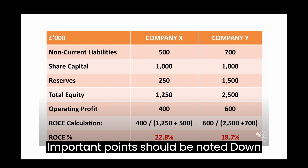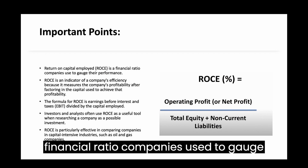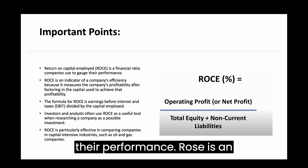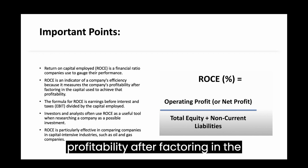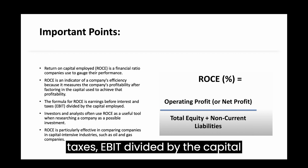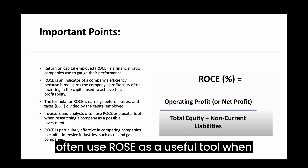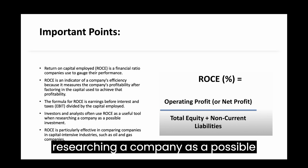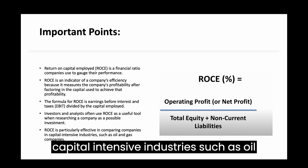Some important points to note: Return on Capital Employed (ROCE) is a financial ratio companies use to gauge their performance. ROCE is an indicator of a company's efficiency because it measures profitability after factoring in the capital used to achieve that profitability. The formula for ROCE is Earnings Before Interest and Taxes (EBIT) divided by the capital employed. Investors and analysts often use ROCE as a useful tool when researching a company as a possible investment, and it is particularly effective in comparing companies in capital-intensive industries, such as oil and gas.